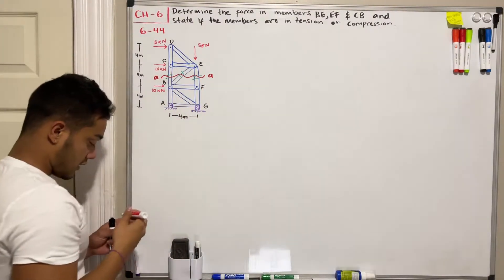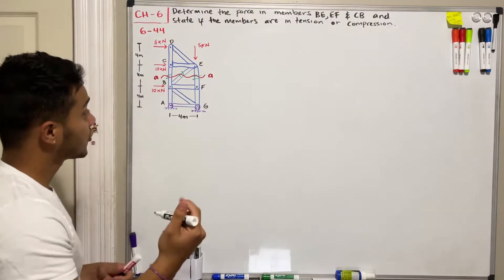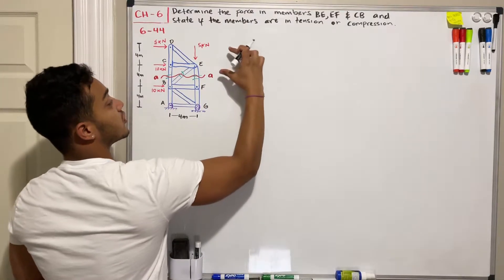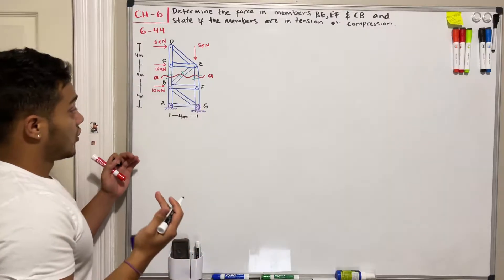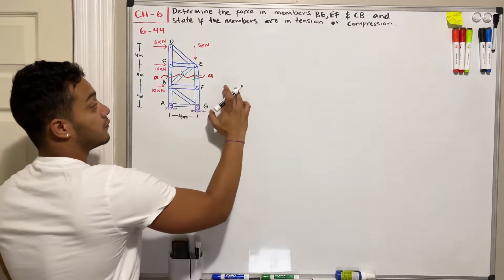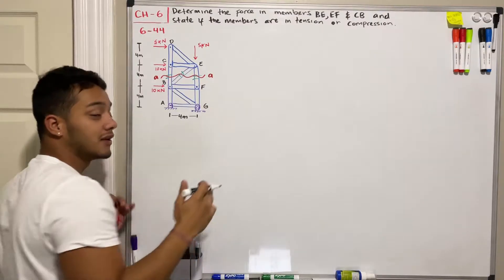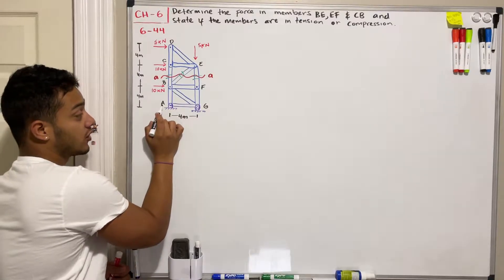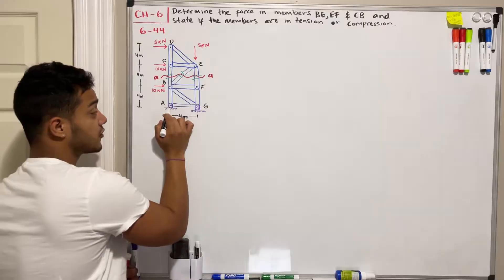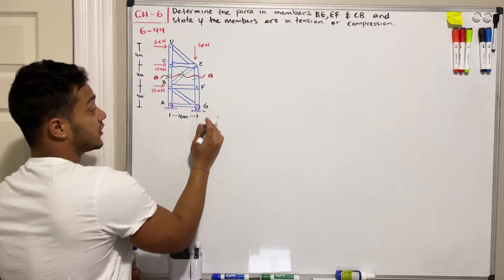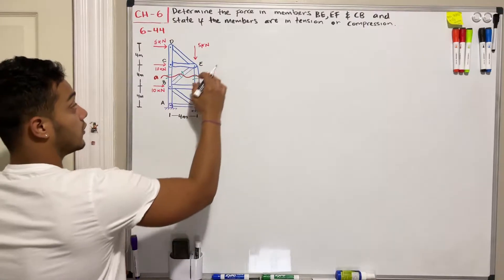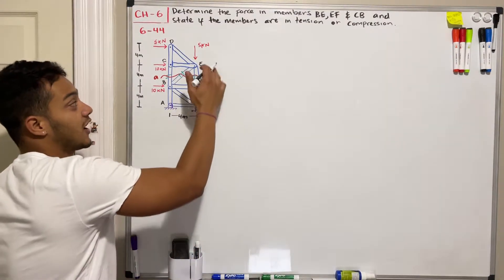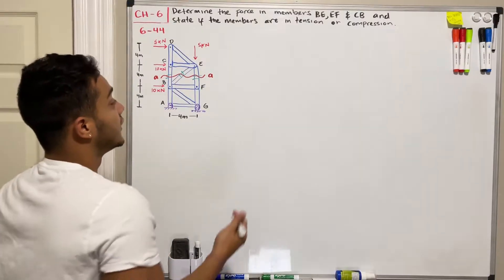After cutting the truss, we decide whether to work with the bottom side or the top side. We compare the number of unknowns in each part and pick the one with fewer unknowns. The bottom part has reaction forces at A and G, giving three unknowns total. The top part has no reaction forces and therefore no additional unknowns, so we'll work with the top part.